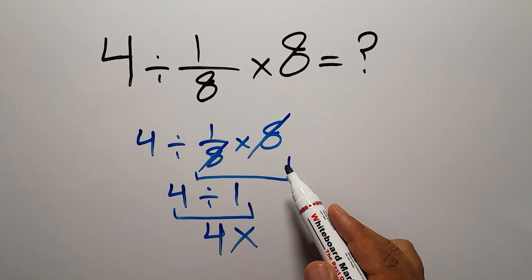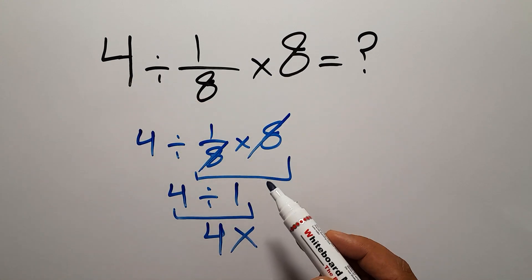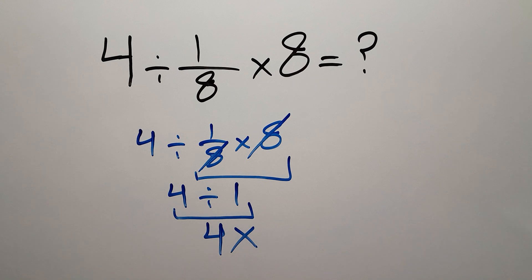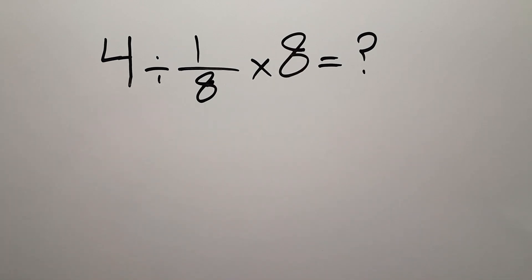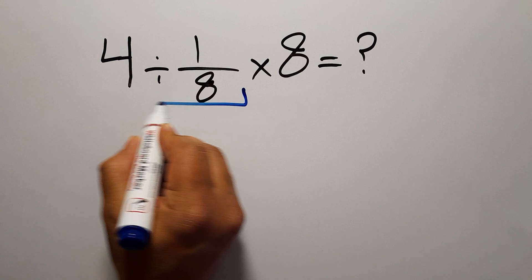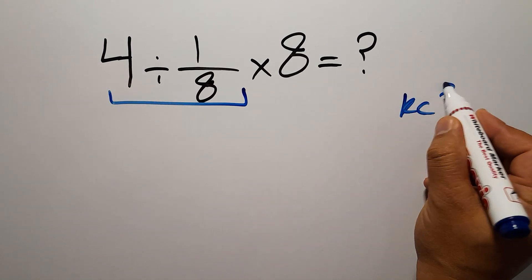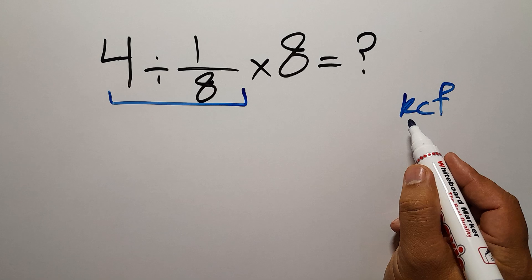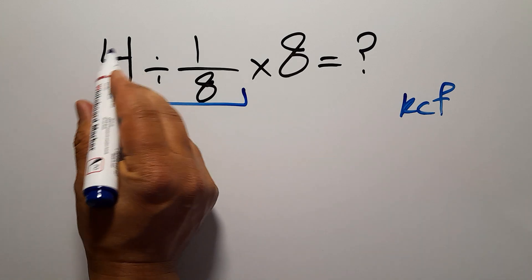And after this division we do this multiplication. So first, 4 divided by 1 over 8. According to the KCF rule: K stands for keep, C stands for change, and F stands for flip. Keep the first fraction.